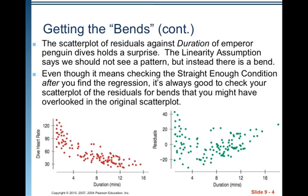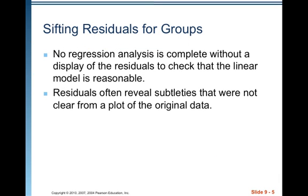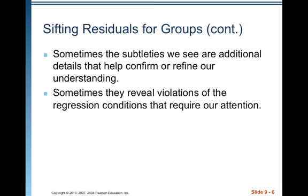You can't account for the curve in a line. Even though it means checking the straight-enough condition after you find the regression — which seems backwards — it's always good to check your scatter plot of residuals for bends you might have overlooked in the original scatter plot. No regression analysis is complete without a display of the residuals to check that the linear model is reasonable. Residuals often reveal subtleties that were not clear from a plot of the original data, including violations of regression conditions.